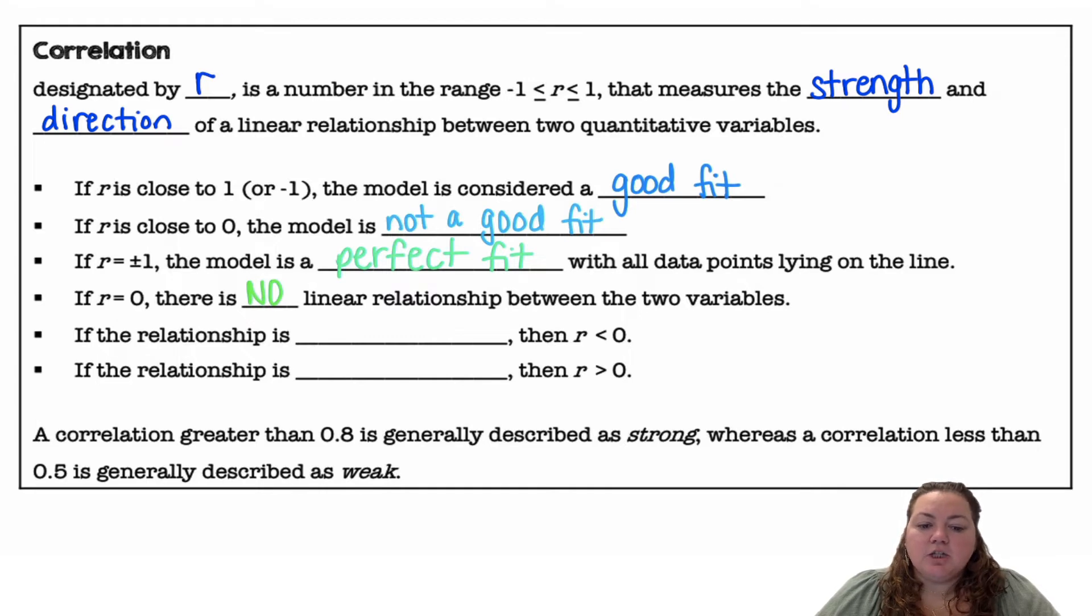If the relationship is negative, then your R value is going to be less than 0. If the relationship is positive, then the R value is going to be greater than 0. A correlation greater than 0.8 is generally described as strong, whereas a correlation less than 0.5 is generally described as weak.